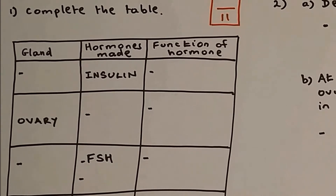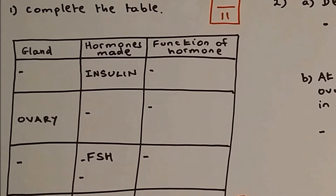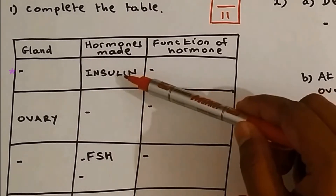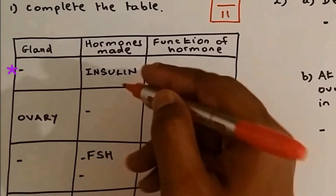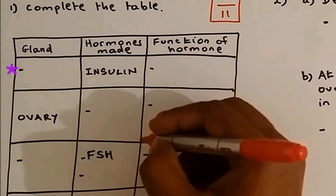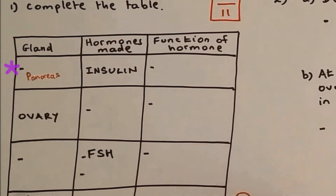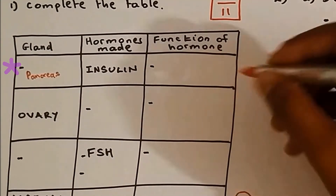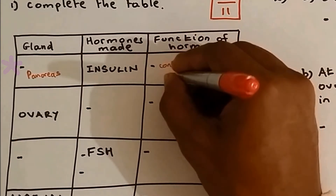I have drawn the table and listed all the glands, hormones, and their functions. Insulin — which gland makes insulin? Insulin is made by the pancreas. And the function of insulin is to control blood sugar level.